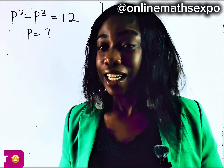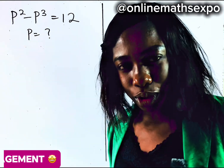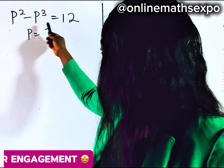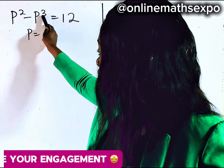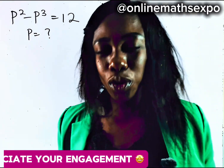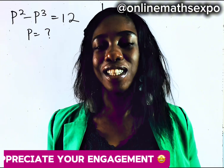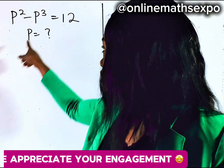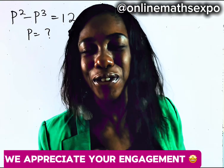Hello and welcome. Let me teach you how to solve this beautiful equation. When you look at this kind of equation, you observe carefully that the highest power of P is three. It means it is called a cubic equation. And what it means also is that we expect to have three solutions for this P. Join me as I teach you how to do it.